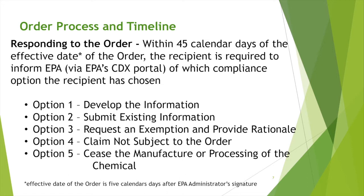The options are: Option 1, develop the information; Option 2, submit existing information; Option 3, request an exemption and provide rationale; Option 4, claim that your company is not subject to the order; Option 5, cease the manufacture or processing of the chemical.